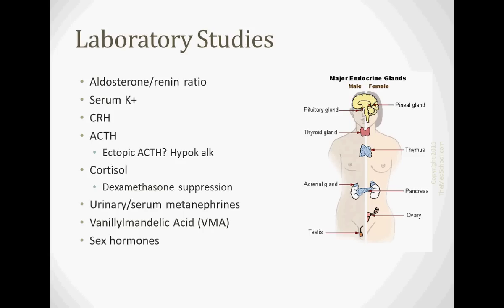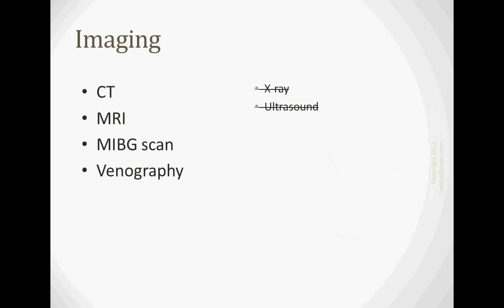So the metanephrines, those are breakdown products of catecholamines. And so if you have those in your urine, you've probably got pheochromocytoma. Vanillylmandelic acid is again another breakdown product. And you check for sex hormones.